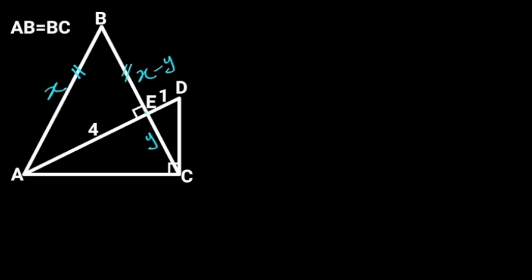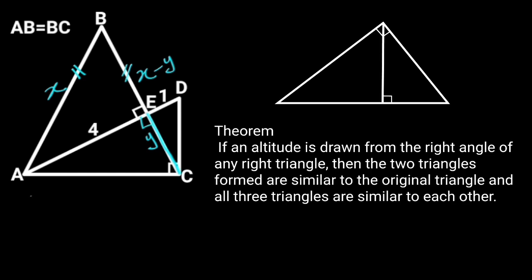Next, let's focus on triangle ACD. Triangle ACD is a right triangle. Observe that EC is an altitude drawn from the right angle. Going further, let's recall the inscribed similar right triangles theorem.